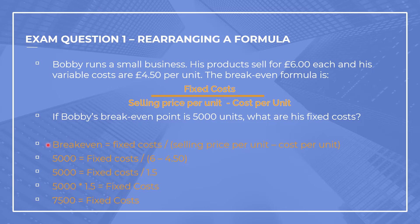Let's work through this. Breakeven equals fixed costs divided by selling price per unit minus cost per unit. Substituting the values: 5,000 equals fixed costs divided by (£6 minus £4.50), which is £1.50. So 5,000 equals fixed costs divided by 1.5. We need to multiply £5,000 by 1.5 to get fixed costs — when we move the divide 1.5 to the other side of the equals, it switches to multiply. So £5,000 times 1.5 equals £7,500 — those are our fixed costs. That is how you rearrange the formula.